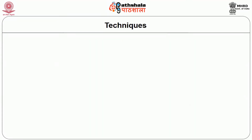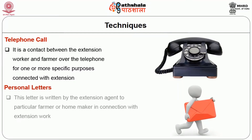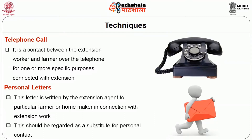Another method under individual contact is the telephone call — a contact between the extension worker and the farmer over the telephone for one or more specific purposes connected with extension. Personal letter is also an individual contact method — a letter written by the extension agent to a particular farmer or homemaker in connection with extension work. It should be regarded as a substitute for personal contact.